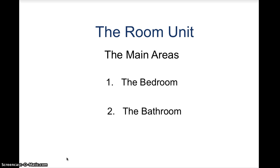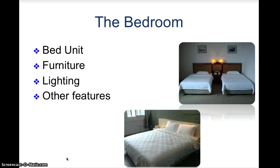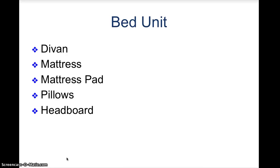The main areas of the room unit are the bedroom and the bathroom. The bedroom comprises of the bed unit, furniture, lighting, and other features. The bed unit has a diwan, which is the base of the bed, the mattress and the mattress pad, pillows and headboard.